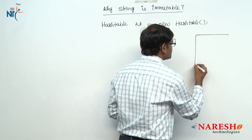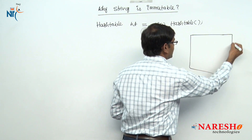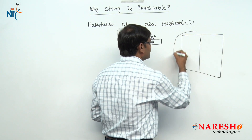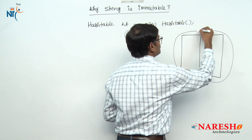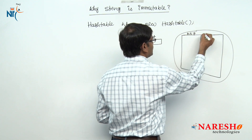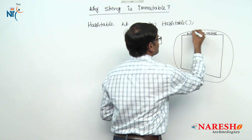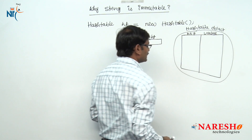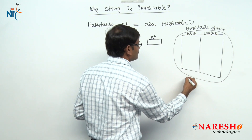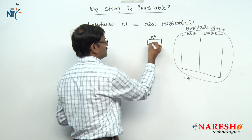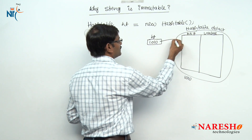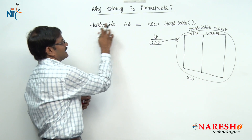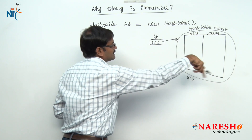The Hashtable object you can imagine as a table with a key column and a value column. This is the key column and this is the value column — this is the Hashtable object. Assume the reference of this object is 1010, so the reference 1010 is stored in ht, pointing to this object.